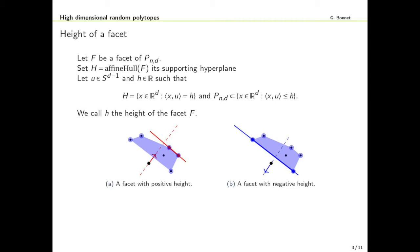Now we are interested in the facets of the polytope. These are the faces of codimension 1. Let f be such a facet and h be its supporting hyperplane. We parametrize this supporting hyperplane by its normal vector u and its signed distance from the origin h, where the sign is plus or minus 1 depending on whether the polytope and the origin are on the same side of the hyperplane or on different sides. We call this signed distance the height of the facet f. Now we define the typical height h_tip as a random variable constructed in the following way: you take x_1 till x_d iid points, so this forms a d-1 dimensional simplex, and you condition on this simplex to be a facet of your polytope and look at the height of that facet.